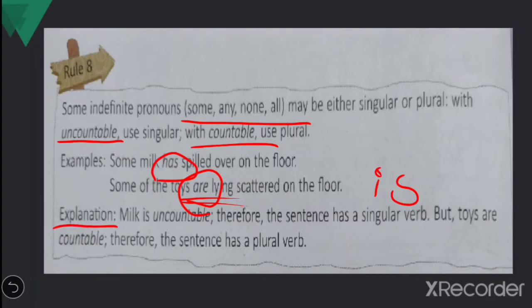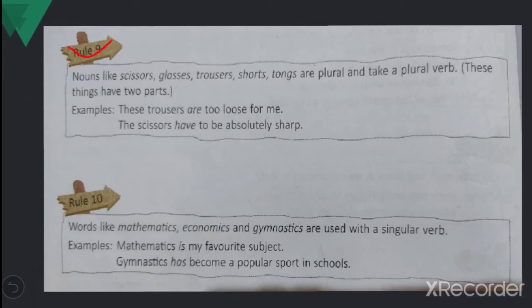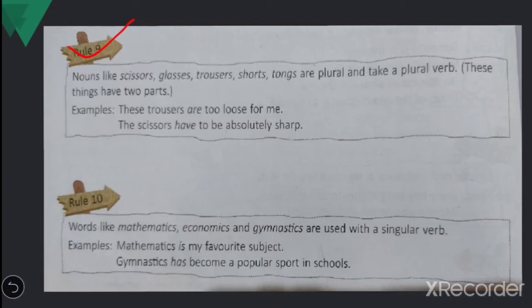Rule number nine: nouns like scissors, glasses, trousers, shorts, and tongs are plural and take a plural verb because these things have two parts. 'These trousers are too loose for me' — 'are' is the plural verb. 'The scissors have to be absolutely sharp' — 'have' is the plural verb.